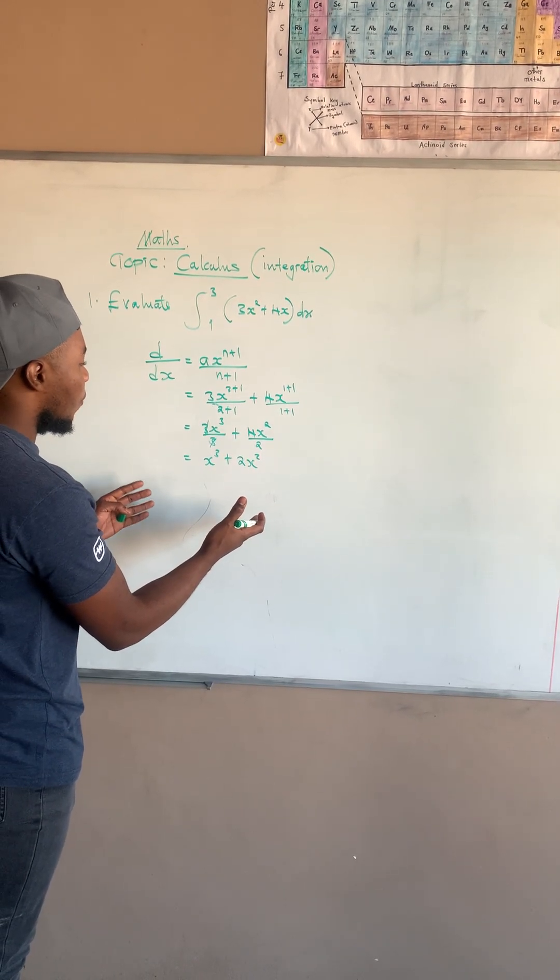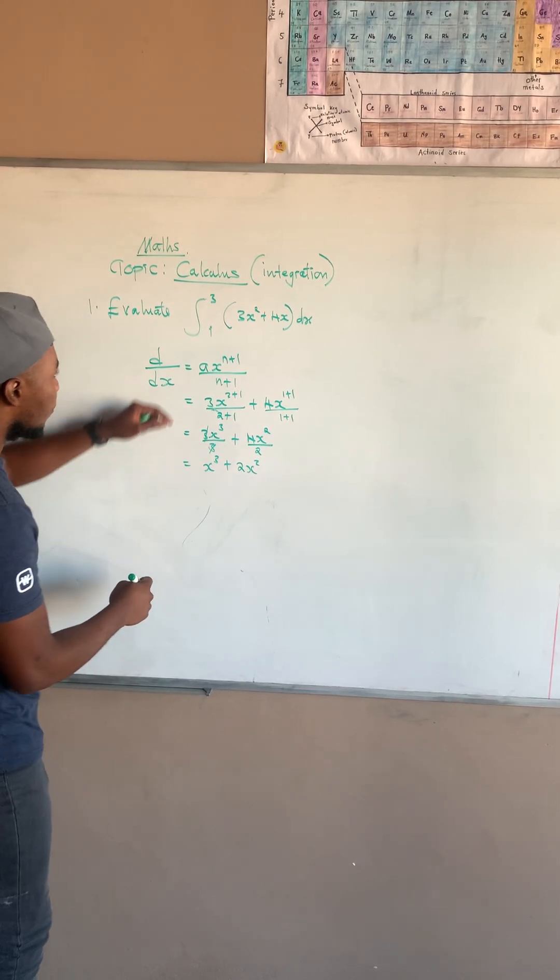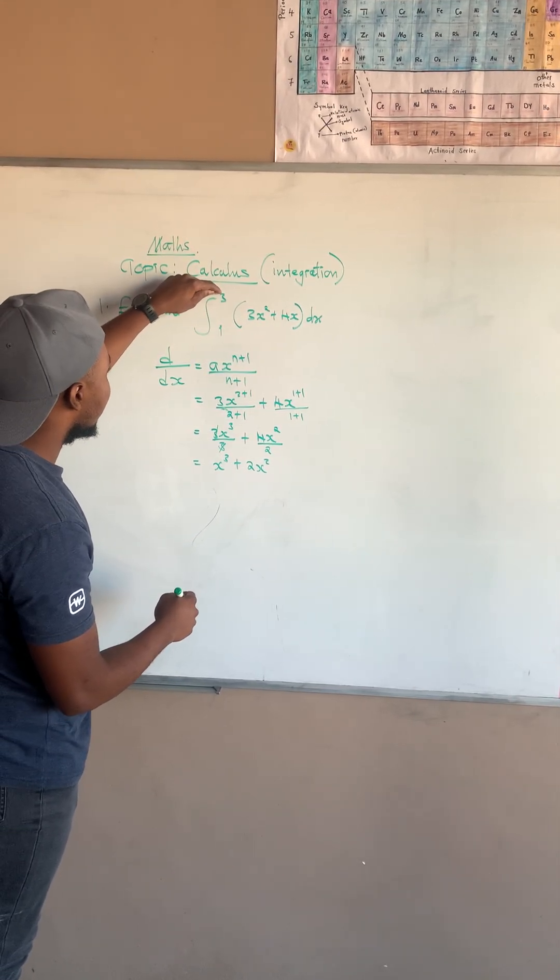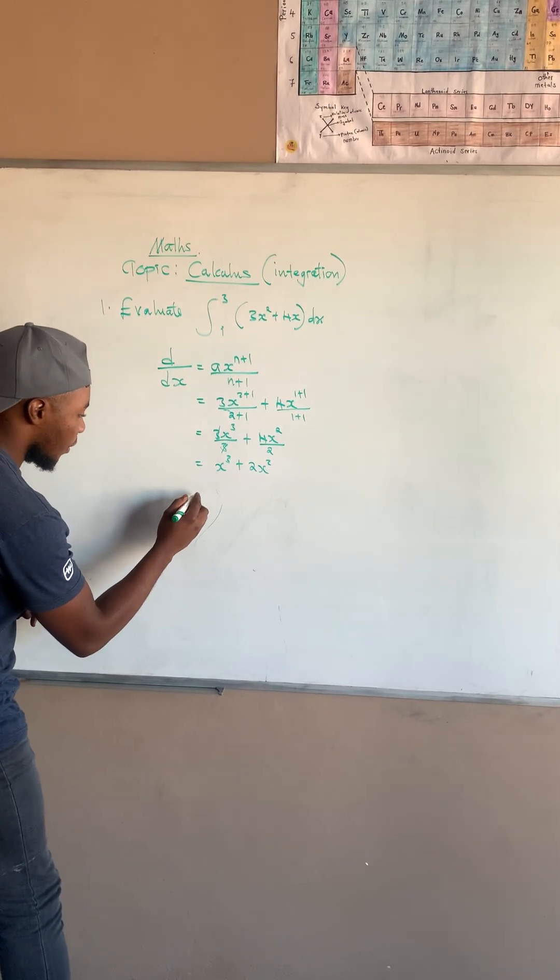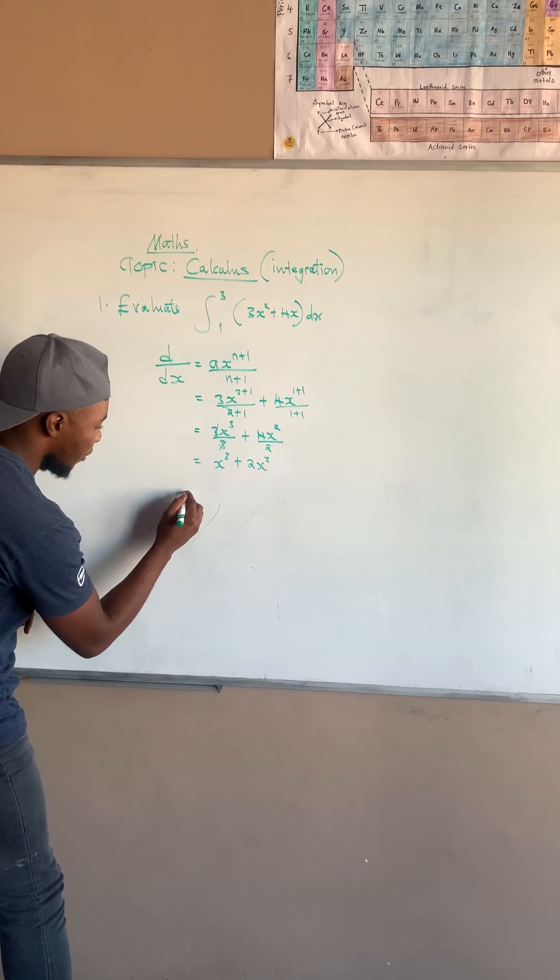Since you have got the numbers here, this is called the upper limit. Then here we have the lower limit. So the second step is that you introduce the upper limit...